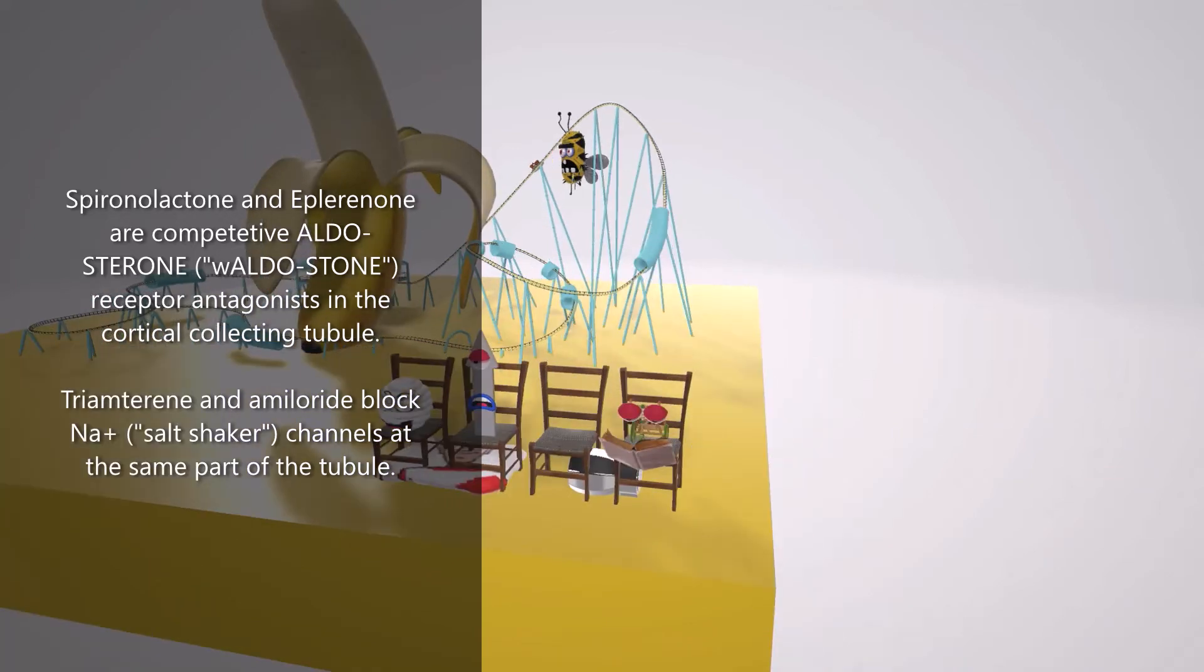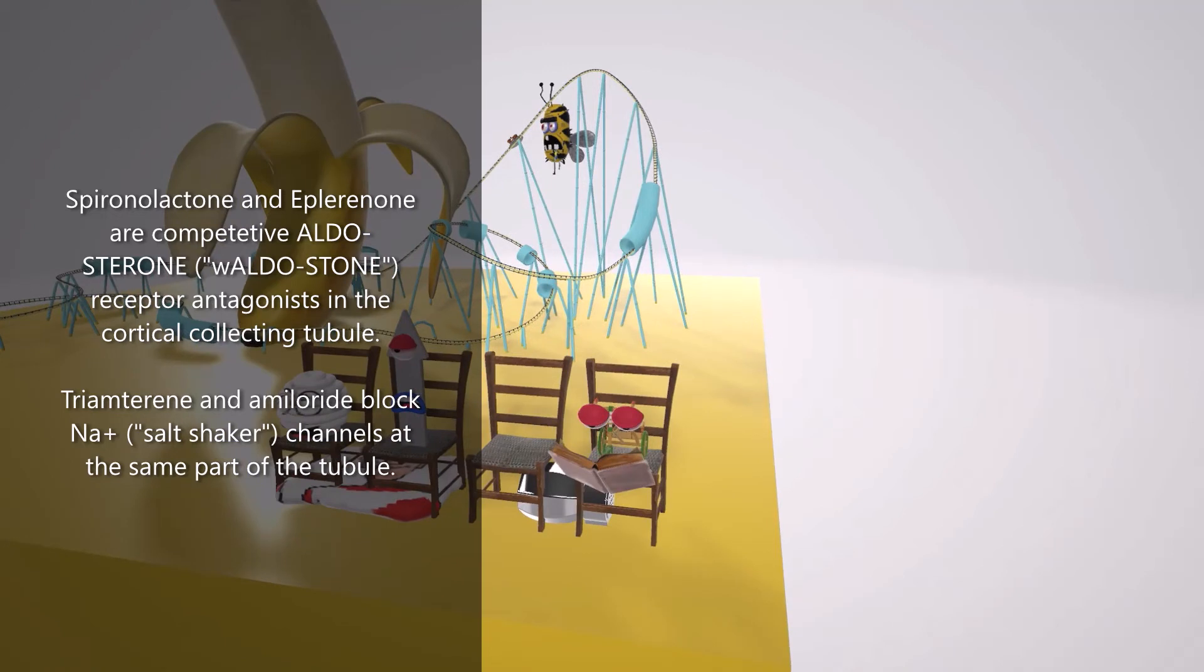And that's why over here, amiloride, well at least where his seat is, as well as the tricycle that's reading for triamterene, are sitting on top of this salt shaker over here. The salt shaker reminds us of sodium, and they're blocking it as triamterene and amiloride block sodium channels.